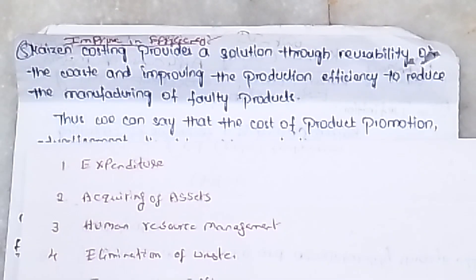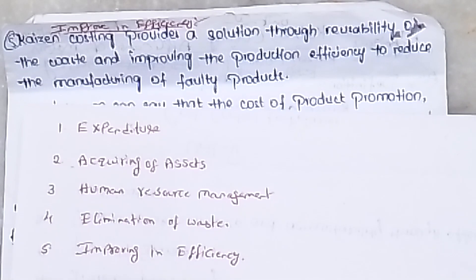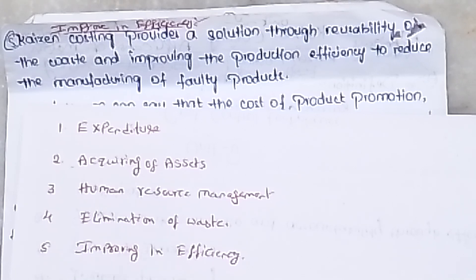So the scope of Kaizen Costing covers: expenditure, acquiring of assets, human resource management, elimination of waste, and improving the overall efficiency. If you like this class, subscribe to our channel, click the bell icon, share, and comment. This topic is useful for the Cost Control Technique subject, Unit 5, in the fifth semester. Thank you very much.